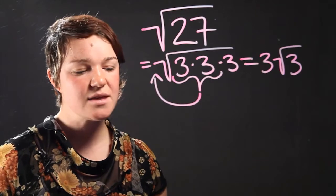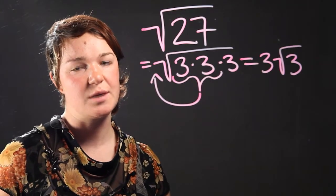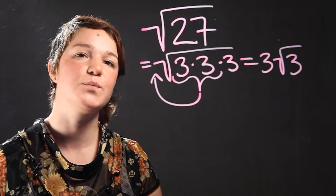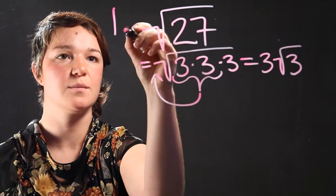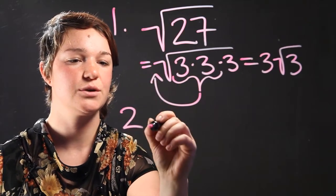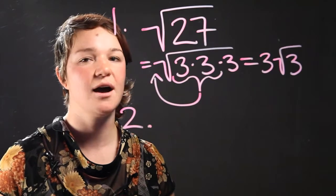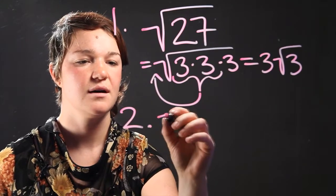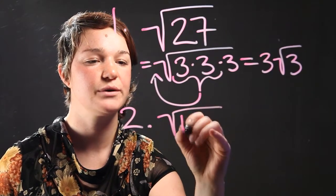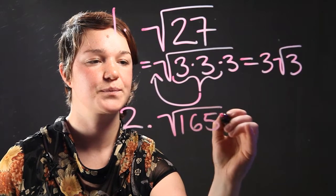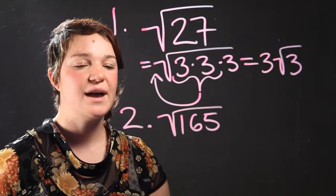So let's say that you're given an even larger number. It's a little bit more complex. Let's do a second example. It's going to be number 1. Number 2, let's do something like 165. Our radical expression is the square root of 165. So we have to simplify it.